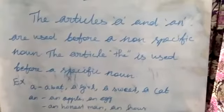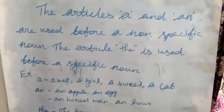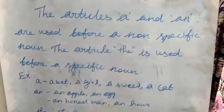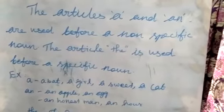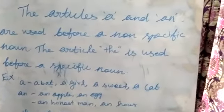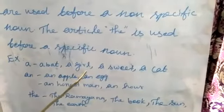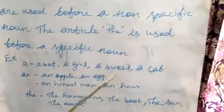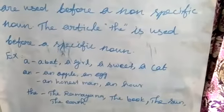First, a. A is used before the nouns beginning with consonants. For an example: a bat, a girl, a sweet, a rat, etc.